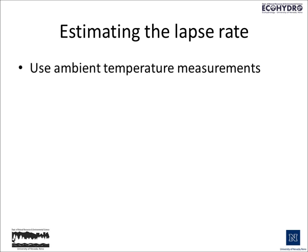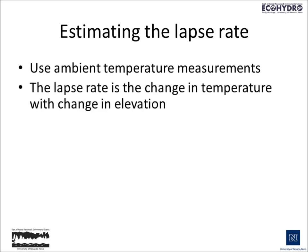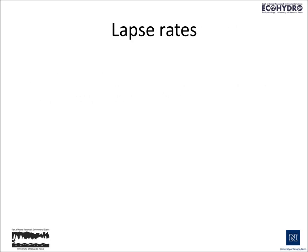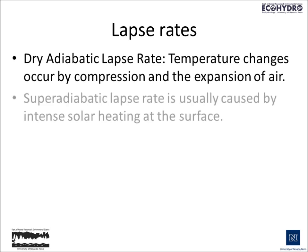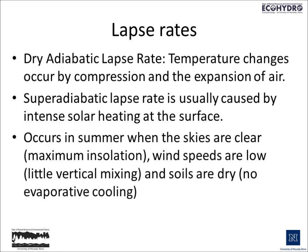So how do we estimate the lapse rate? We can use ambient temperature measurements. The lapse rate is the change in temperature with change in elevation, so we need differential temperature measurements at different altitudes. There are several kinds of adiabatic lapse rates. With the dry adiabatic lapse rate, temperature changes occur by compression and expansion of air. The super adiabatic lapse rate is usually caused by intense solar heating at the surface — occurring in summer when skies are clear, wind speeds are low, soils are dry, and there's not much evaporative cooling. The dry adiabatic lapse rate is about minus one degree centigrade per hundred meters of rise.